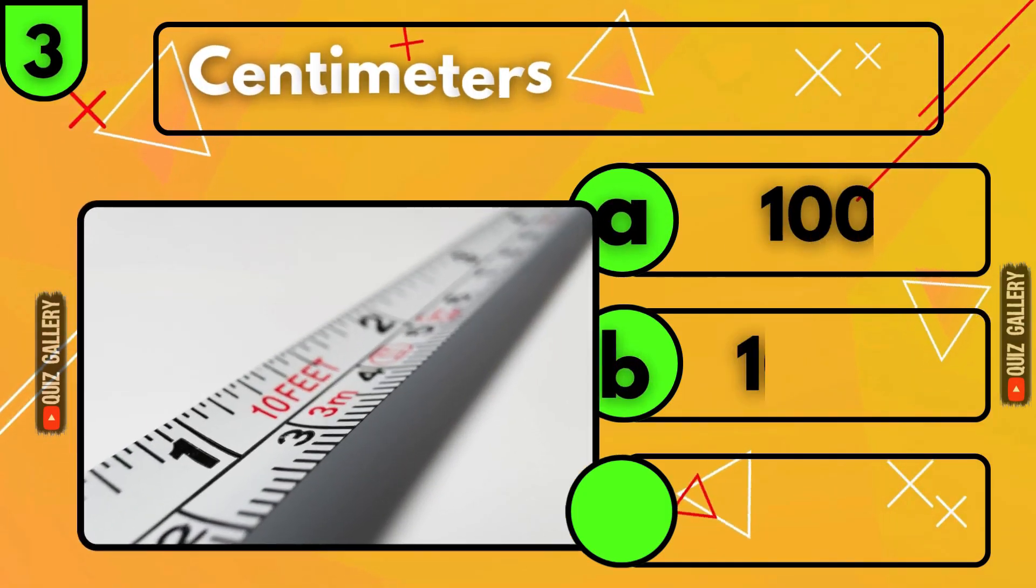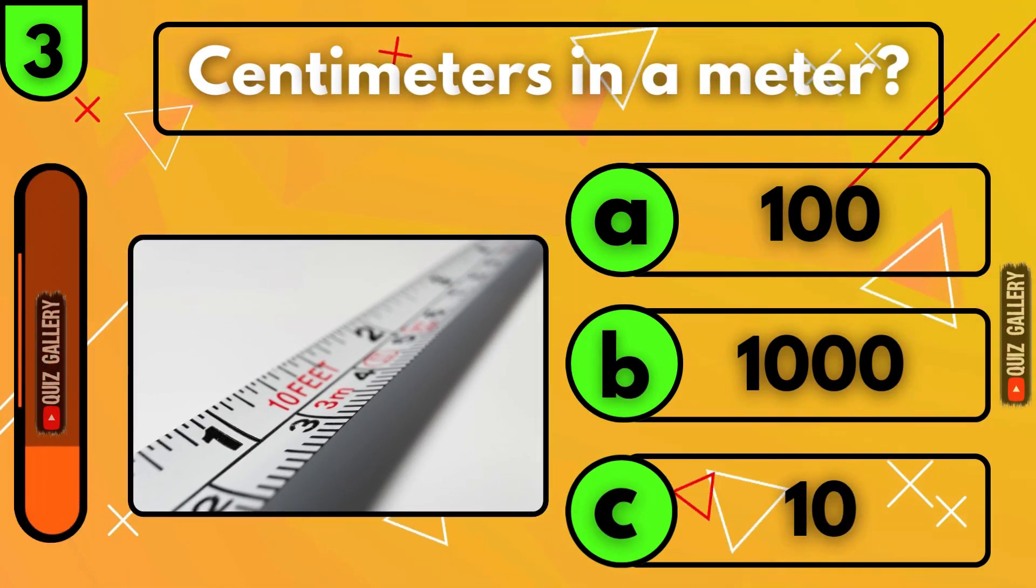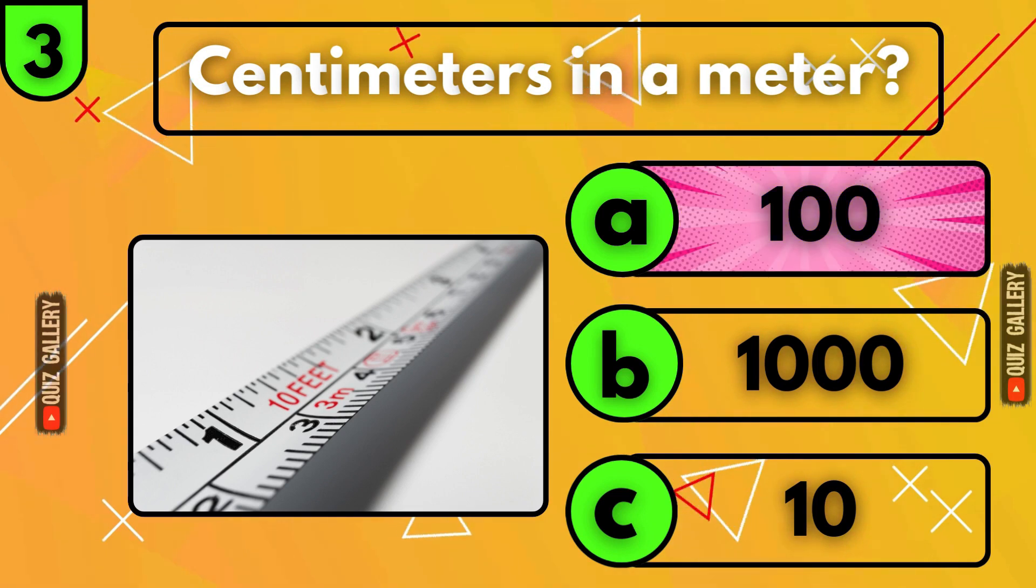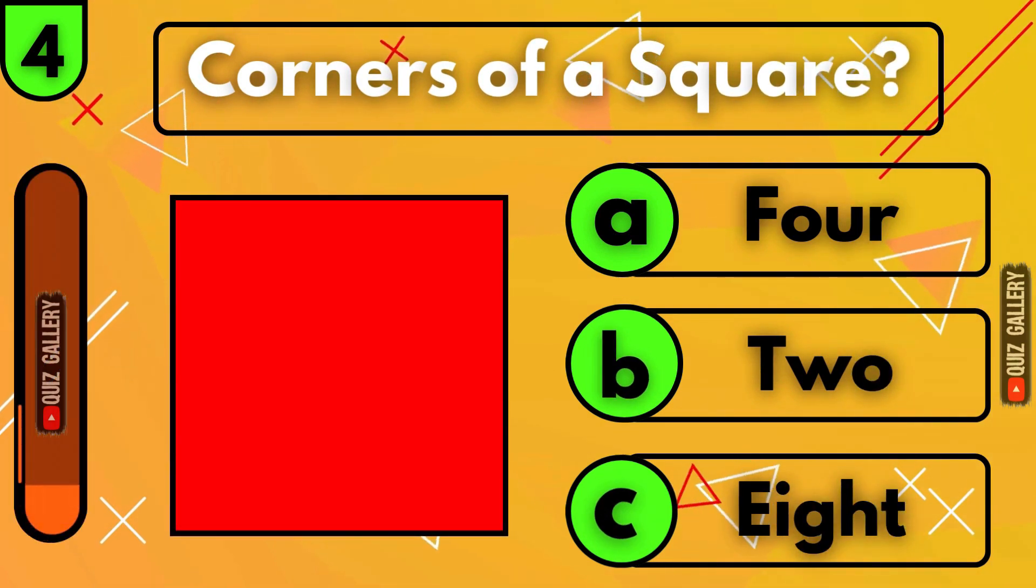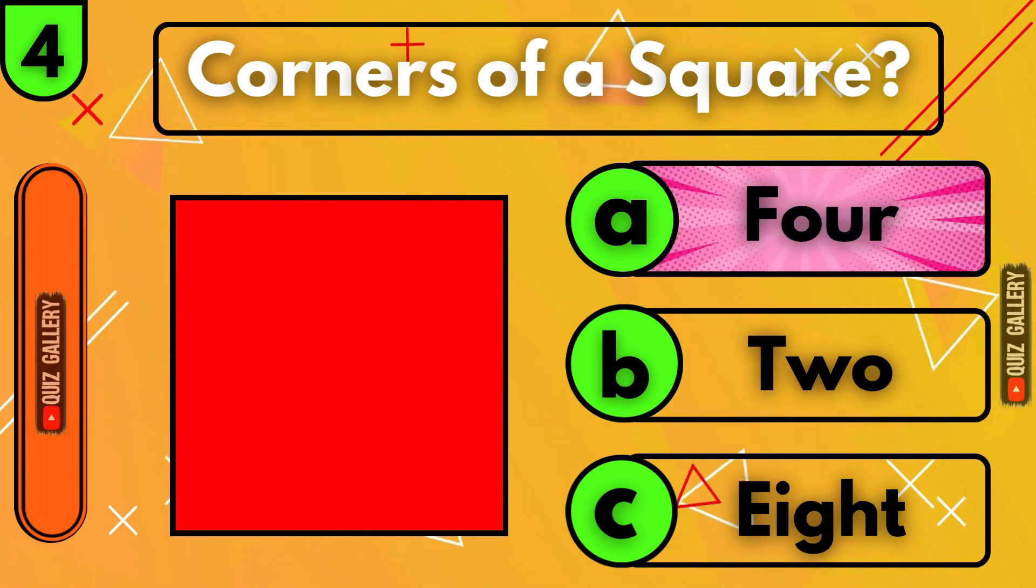How many centimeters are in a meter? Hundred centimeters! How many corners does a square have? Four corners!